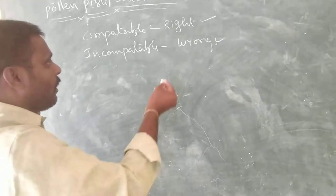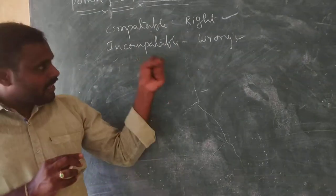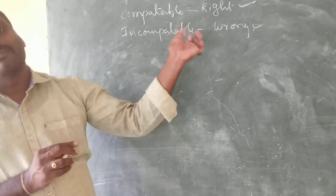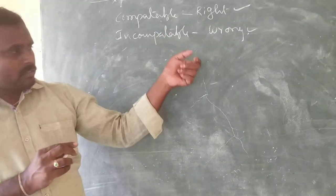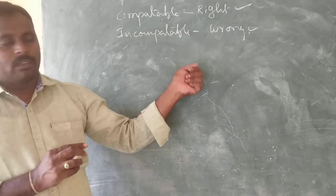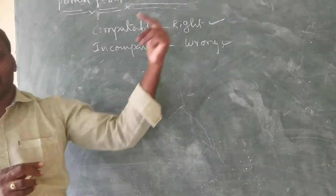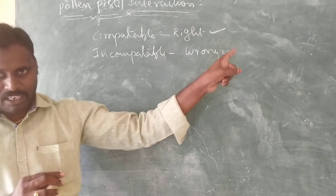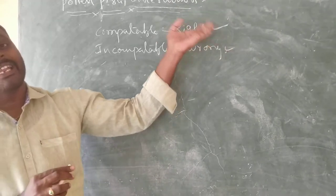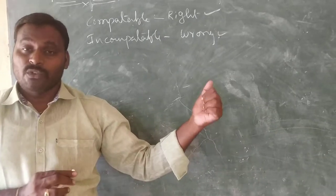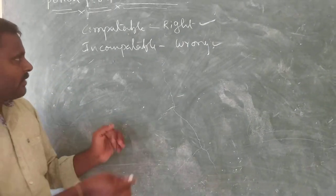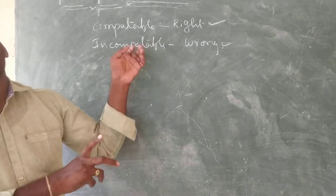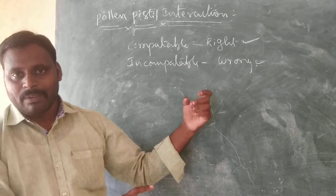If the stigma receives the compatible pollen grain, it accepts it and allows the pollen grain to germinate over the stigma. If the pollen grain received by the stigma is incompatible, then the stigma rejects germination of the pollen grain. If it is the right one, the stigma provides moisture and nutrients to germinate the pollen grain over the stigma.